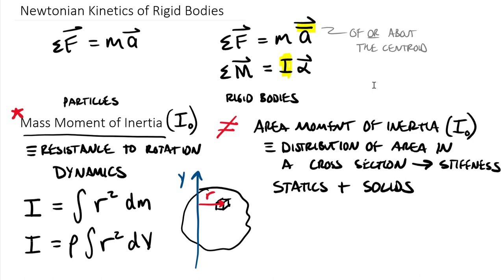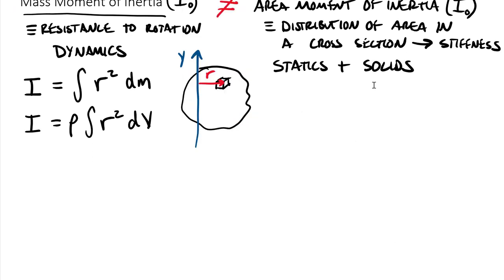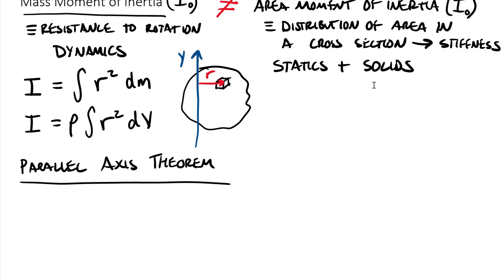Because double and triple integrals are covered solidly in calculus, the focus in dynamics will be on composite bodies — starting with a chart of mass moments of inertia and combining those to find the composite body moment of inertia around various axes. To do that, we use what's called the parallel axis theorem. It states: the moment of inertia about some desired axis equals the moment of inertia about the centroid (I-bar) plus mass times distance squared.